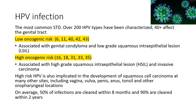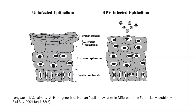High-risk HPV is also implicated in squamous cell carcinoma at many other sites including vagina, vulva, penis, anus, tonsil, and other oropharyngeal locations. On average, 50% of infections are cleared within 8 months and 90% are cleared within 2 years.